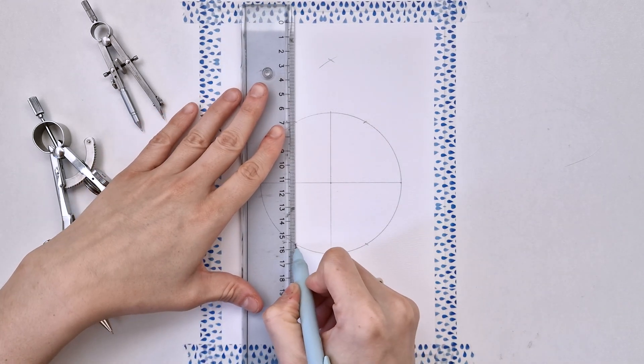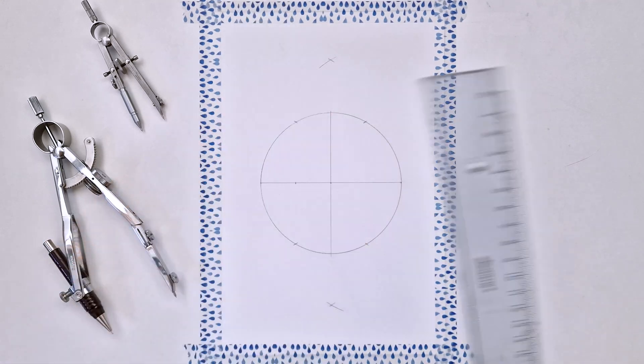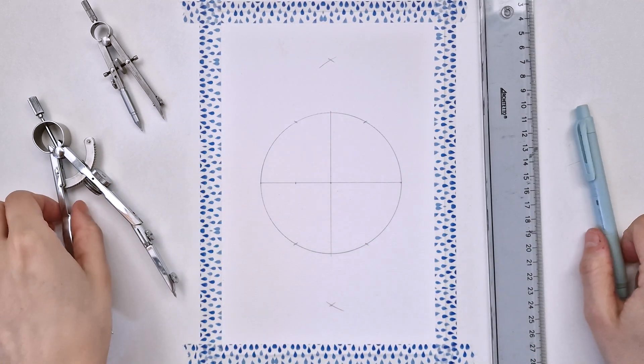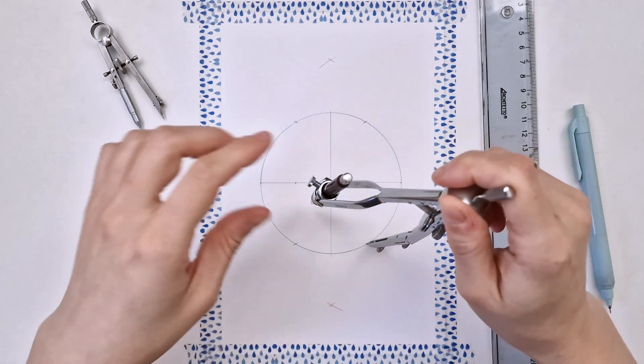Next I'm aligning my ruler to these two intersections and making a mark on the horizontal line. Then grabbing my compass back again, pointing it on this point,